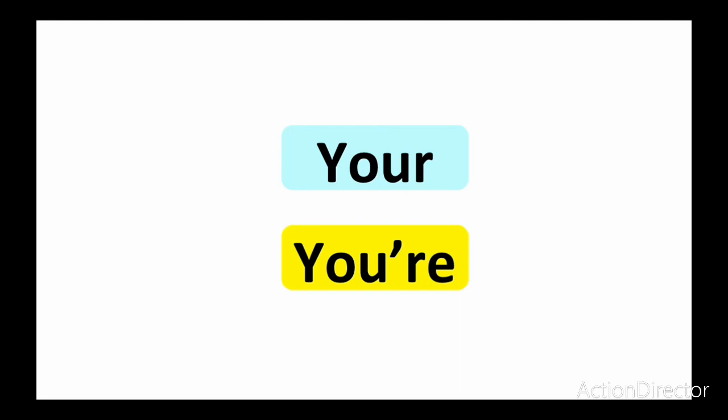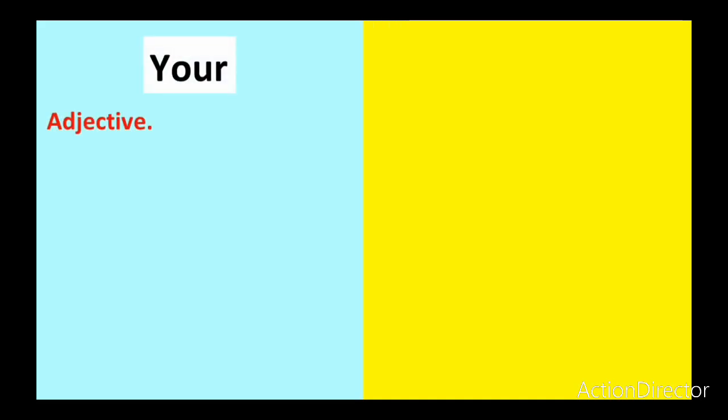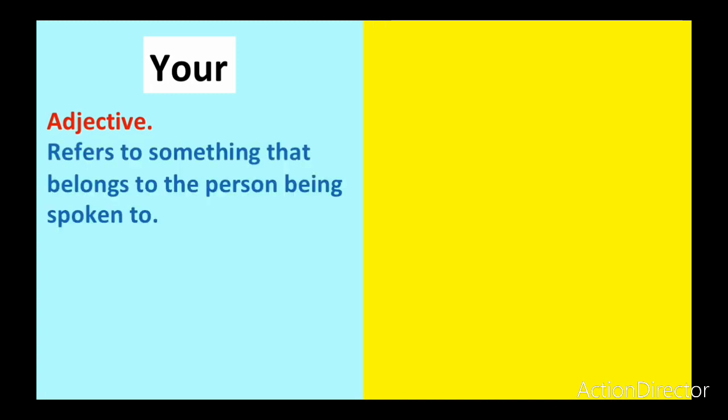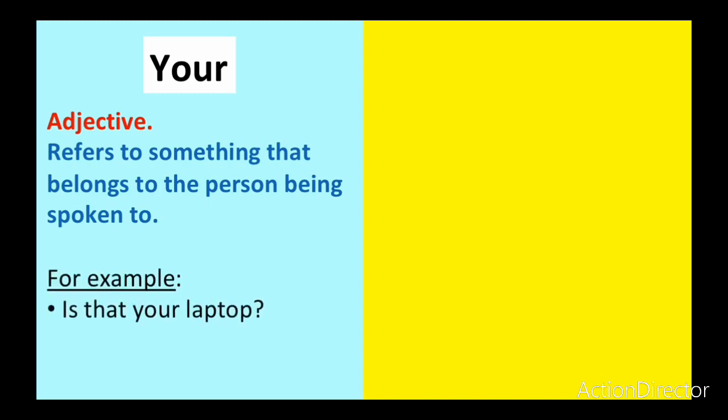In this lesson, we are going to learn the difference between these two words and how to use each in a sentence. Your is an adjective — specifically, a possessive adjective — and it refers to something that belongs to the person being spoken to. For example, we can use this in a question: Is that your laptop? Here we're asking if the laptop belongs to that person.